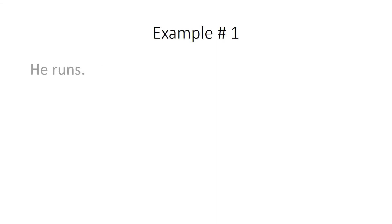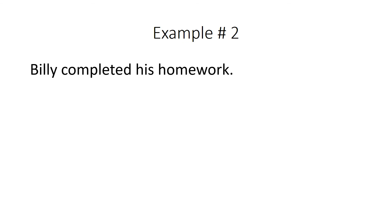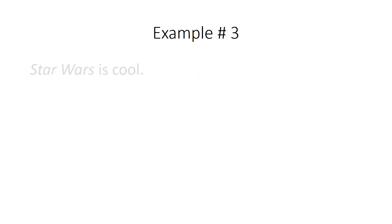Here's an example. 'He runs.' He is the subject and runs is the verb, the predicate. Notice, just a subject and a verb make a sentence — that's two words, but it's still a sentence. It has all the essential parts: subject and predicate. Example two: 'Billy completed his homework.' Billy is the subject, completed is the verb, and everything following it is the predicate. Example three: 'Star Wars is cool.' Star Wars is the subject, and 'is' is the verb — everything following the verb is the predicate.